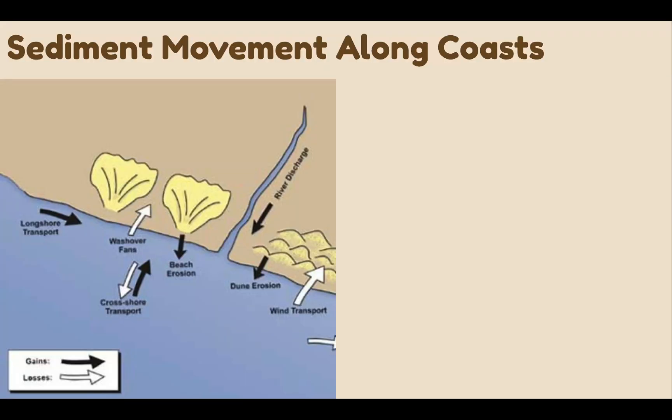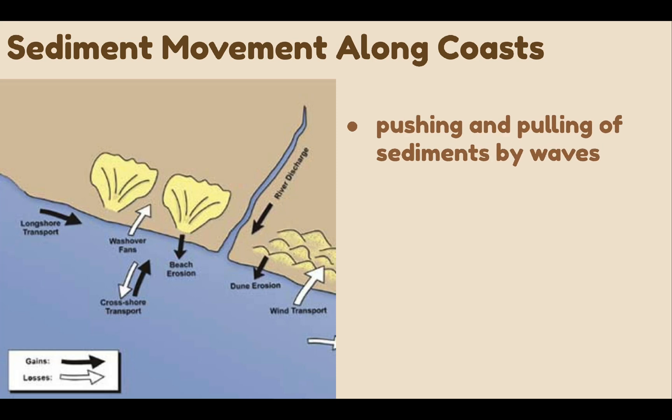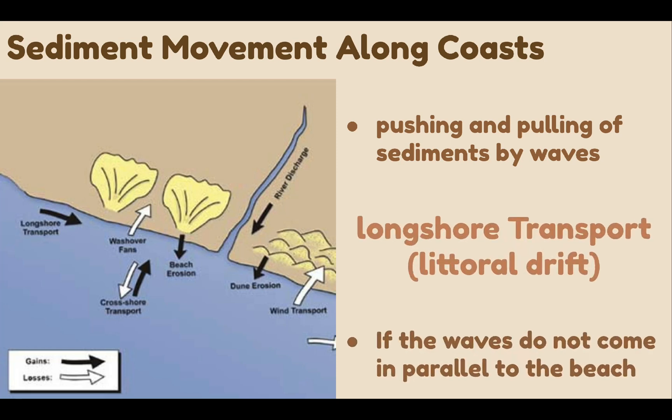The next coastal process is the movement of sediments along the coast. As a wave crashes on the shore, the water pushes sediment up the beach and then pulls it back down as the water slides back. If the waves do not come in parallel to the beach, longshore transport, or what we call littoral drift, of sand occurs.